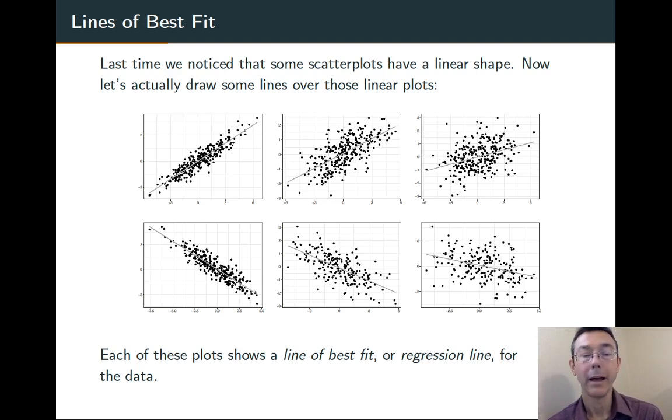We can talk like this when we have a very tight relationship, like in the graphs at the left, as well as when things are more cloudy, like on the right. If we draw a line over the graph in an intelligent way, we'll call that the line of best fit or regression line.